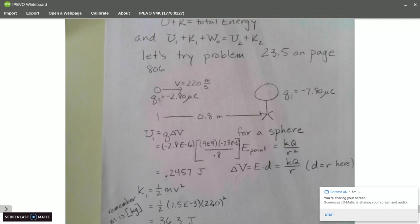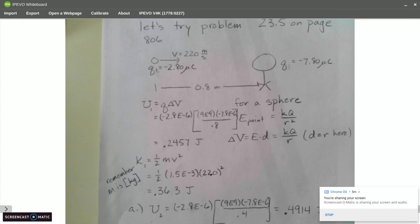So let's try problem 23.5 on page 806. I actually reversed Q1 and Q2, but it turns out not to matter here. So you can probably do a better job if you keep Q2 on the right and Q1 on the left.